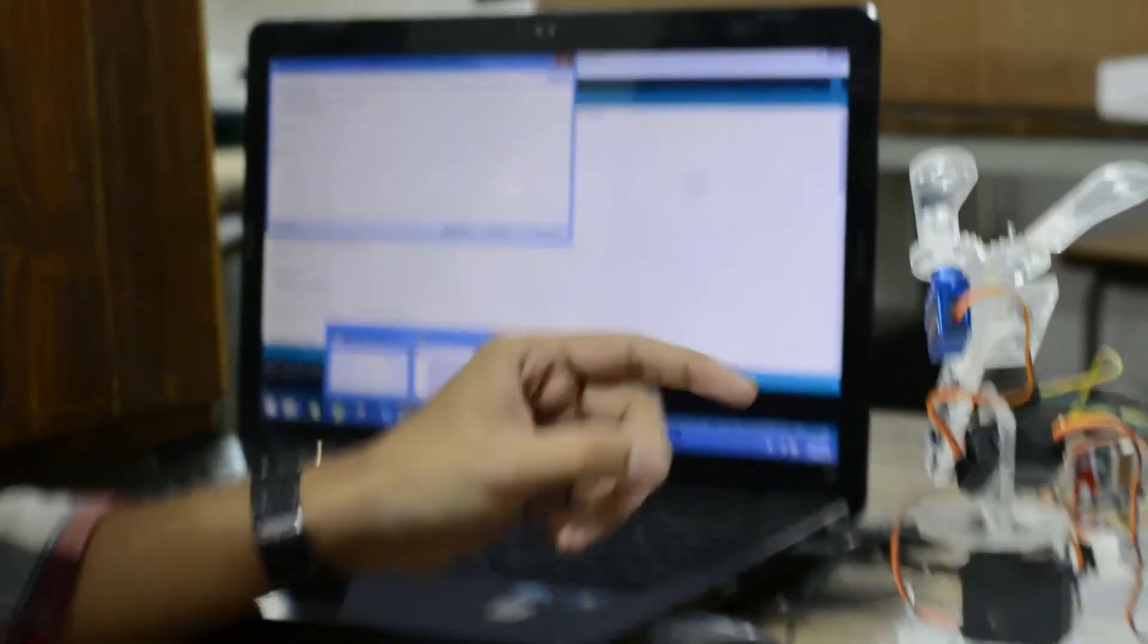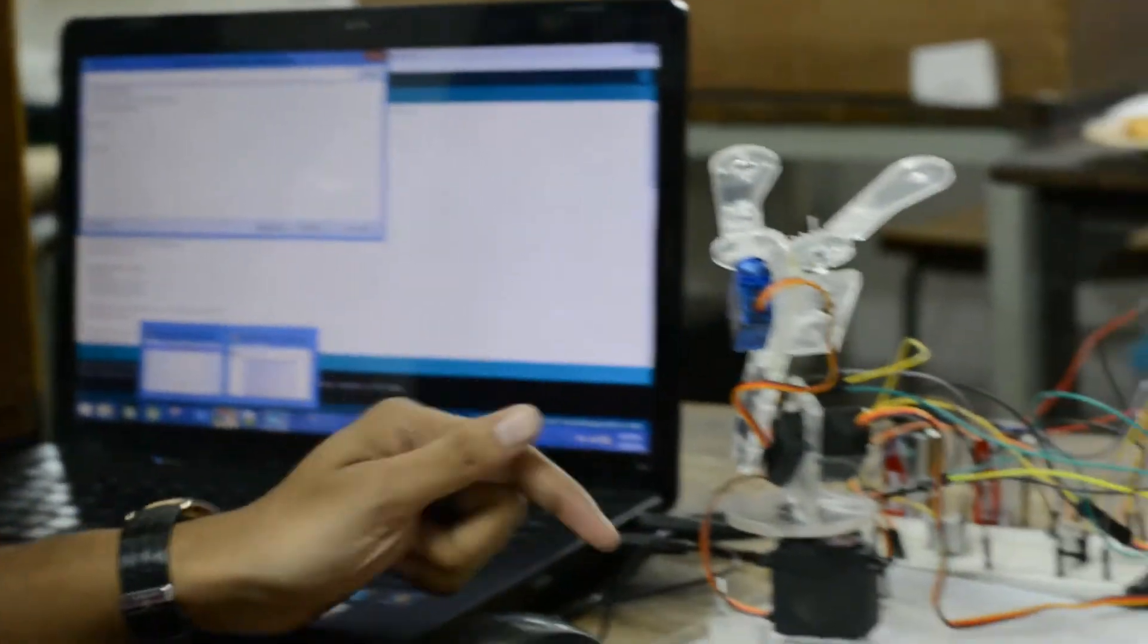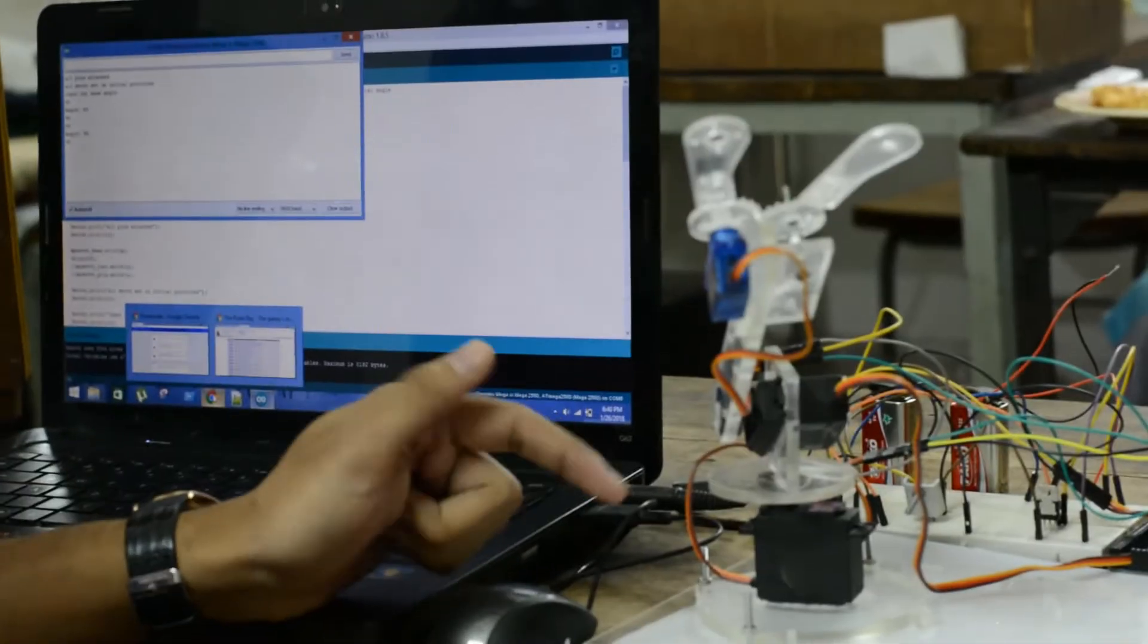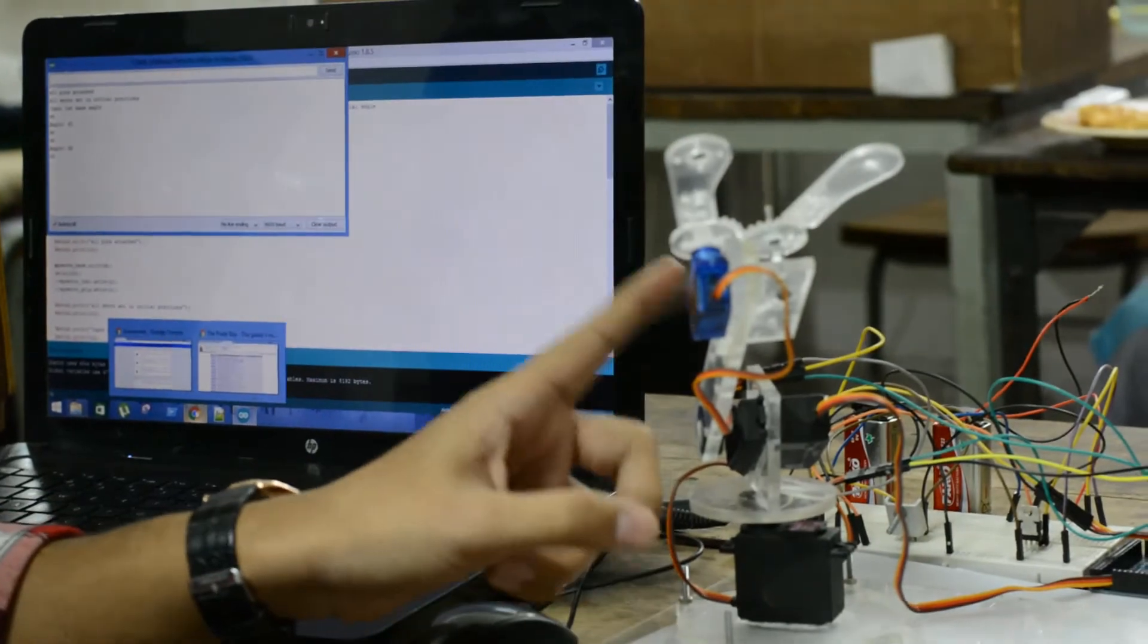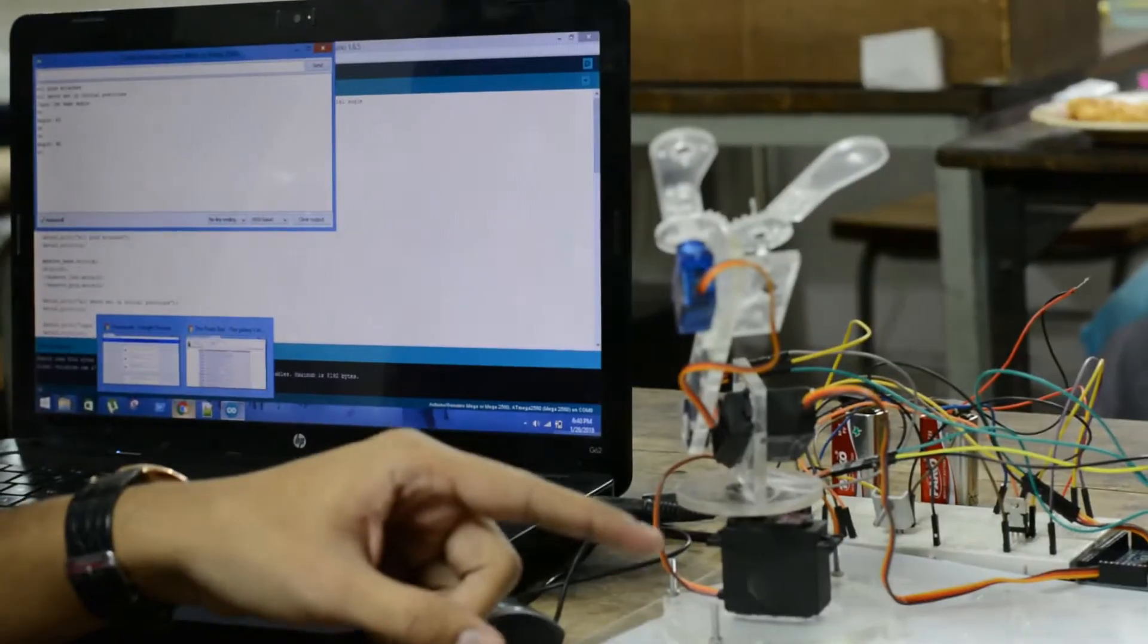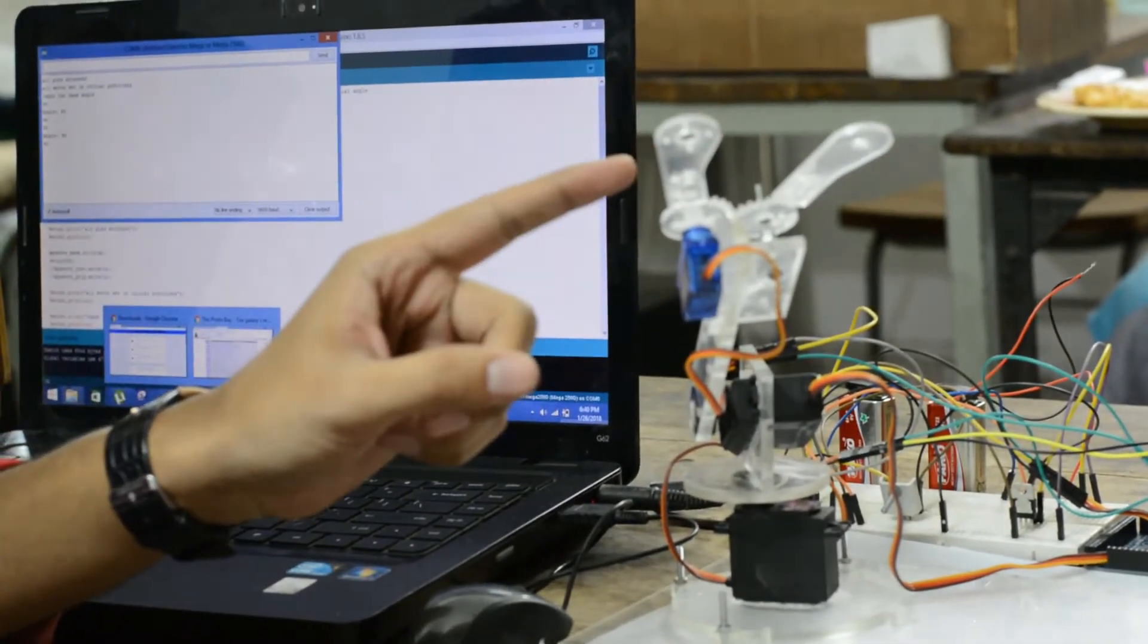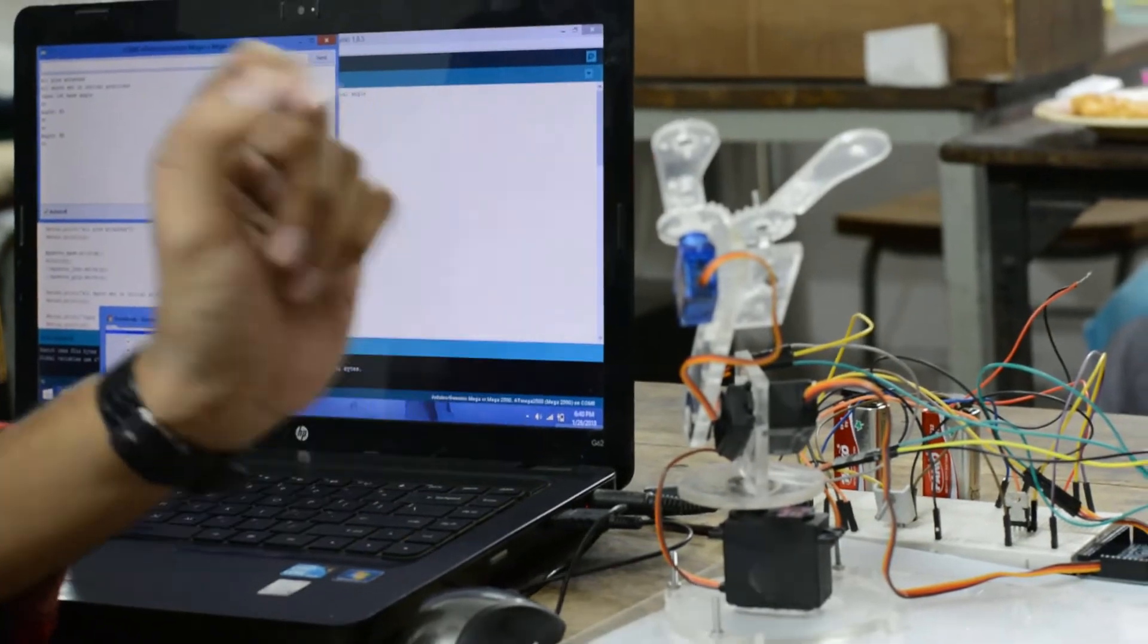There will be two angles, angle theta1 and angle theta2. At angle theta1 the object will be placed and we should pick up the object, and at angle theta2 we will transfer the object. Now if we give input to the serial monitor theta1, the base servo will go to that angle and the middle servo hand will go downward and the grip will close and it will pick up the object.